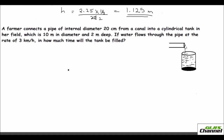Let us move on to the third problem. A farmer connects a pipe of internal diameter 20 centimeters from a canal into a cylindrical tank in her field, which is 10 meters in diameter and 2 meters deep. The tank diameter is 10 meters and height is 2 meters. The pipe diameter is 20 centimeters. We need to find how long it takes to fill the tank, given the water flows at 3 kilometers per hour.